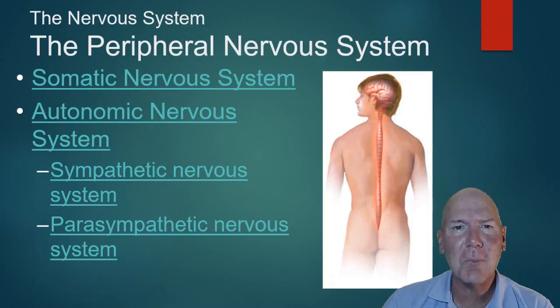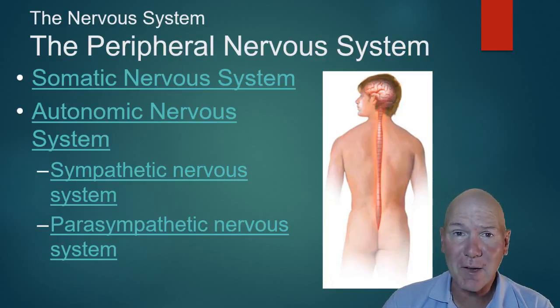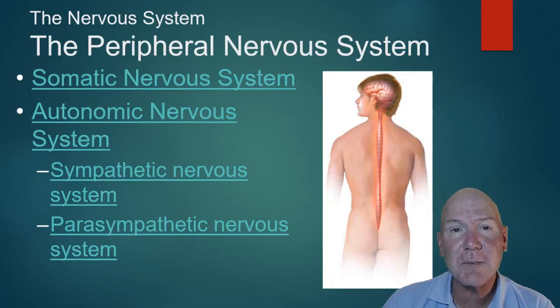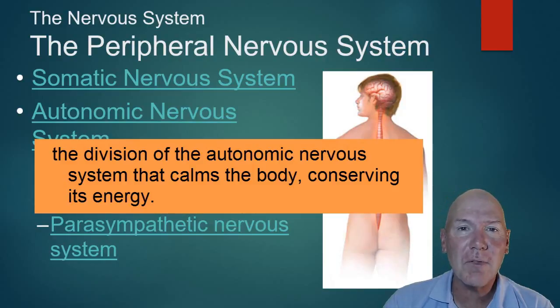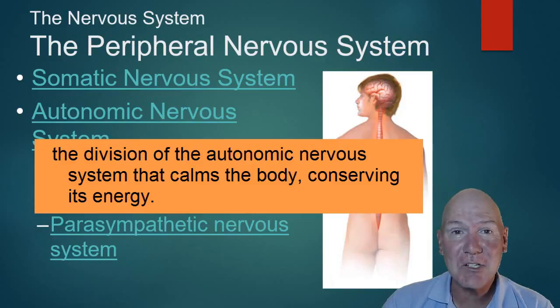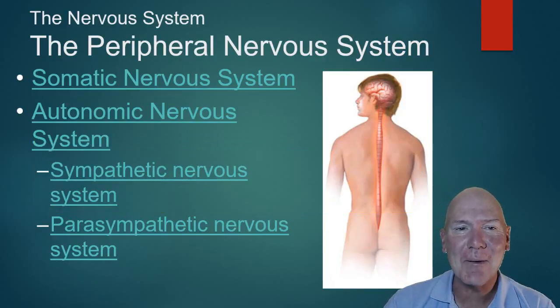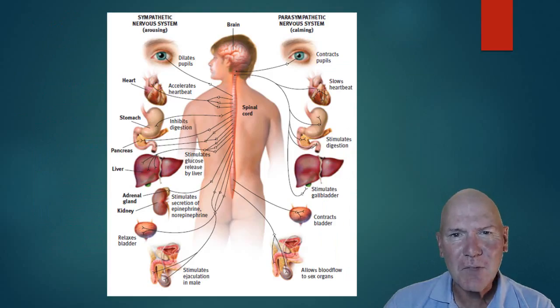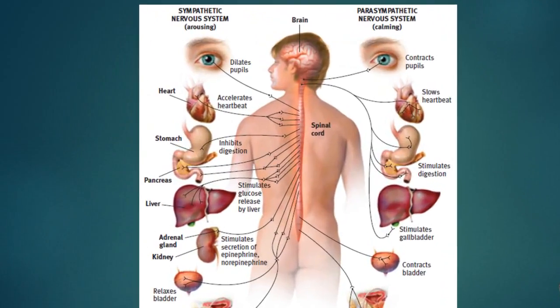When you have that startle reflex or anxiety, your body deals with that stress and prepares you to either run away or fight the threat. Once the threat is gone, the parasympathetic nervous system sets in and brings everything back to normal — heart rate, blood pressure, digestion. On the left is the sympathetic nervous system, a division from the peripheral nervous system's autonomic branch, down to the sympathetic and parasympathetic.